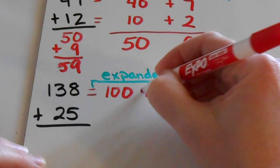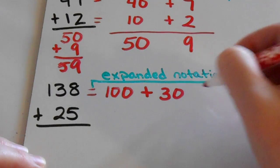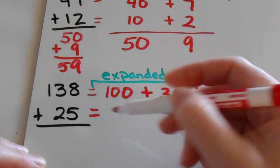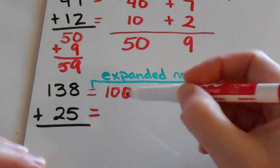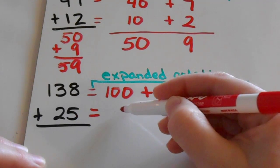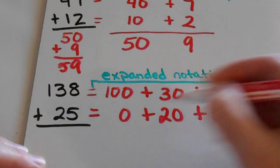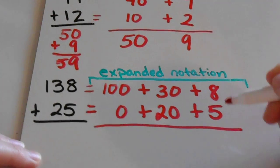So I have 100, 3 tens, and 8 ones. Same thing for the 25. Now since the 25 doesn't have a hundreds place, I can either leave this blank or I can write in a zero.